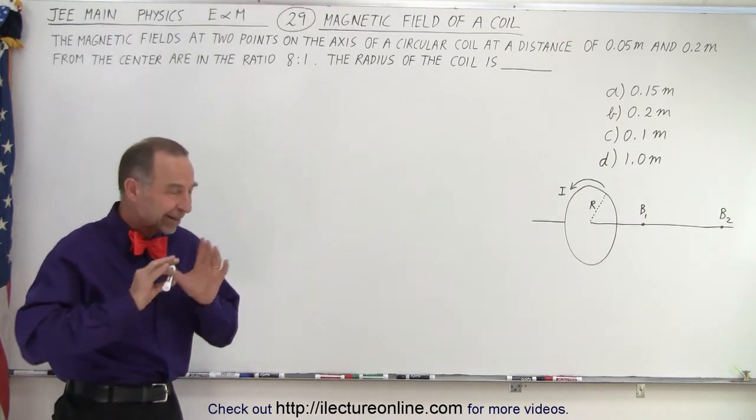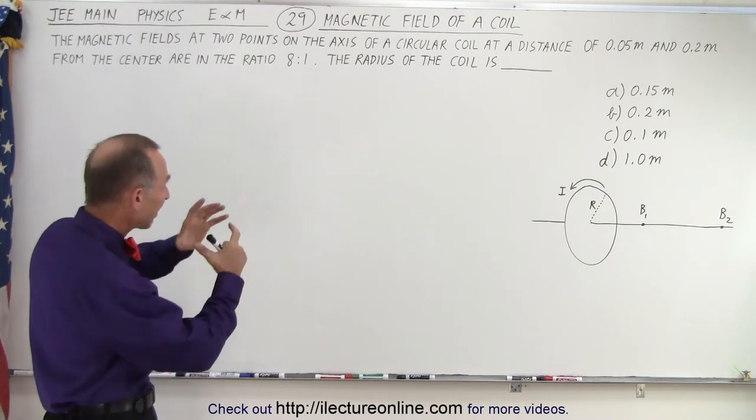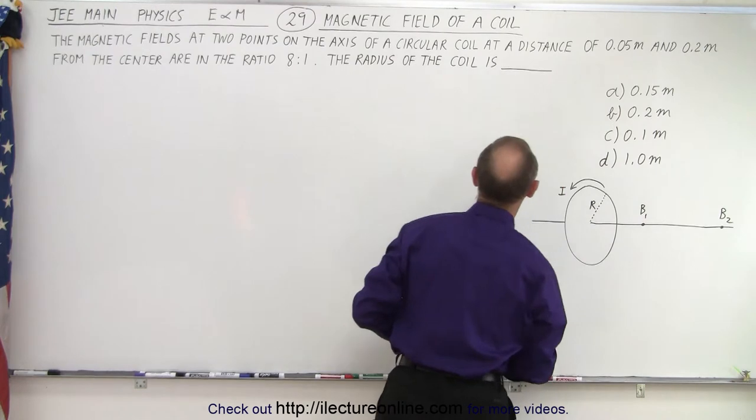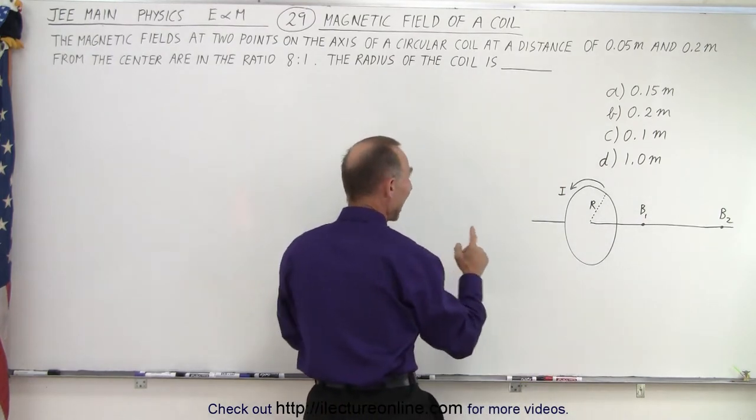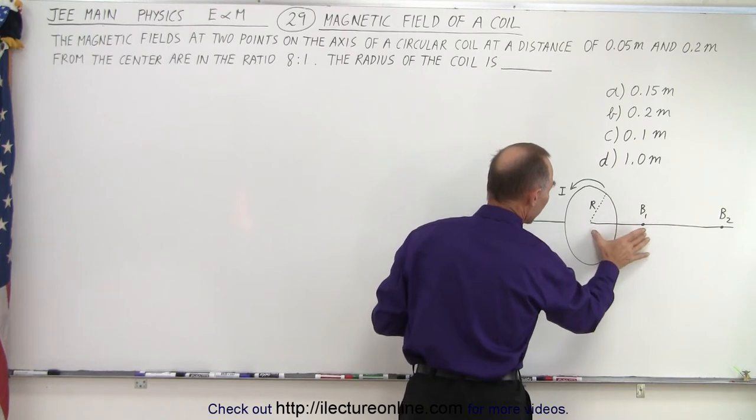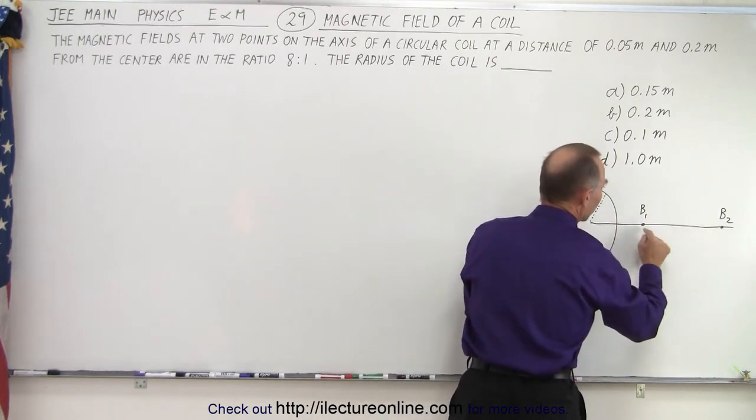So first let's think about what it looks like. We have an axis through the coil and two points on that axis from the center of the coil. This distance right here would be 0.05 meters. Distance here is 0.2 meters.